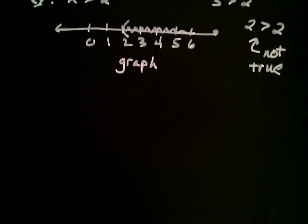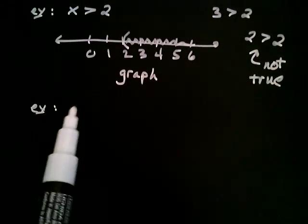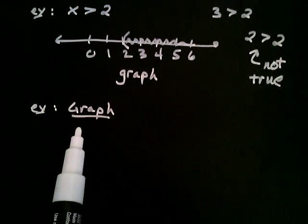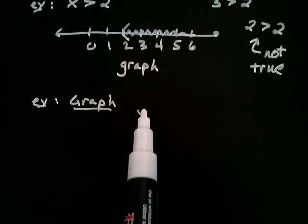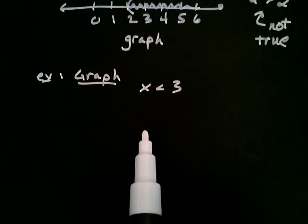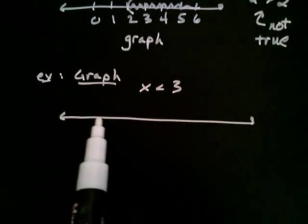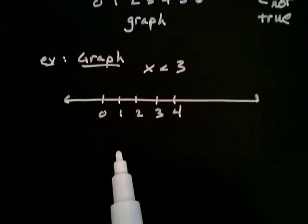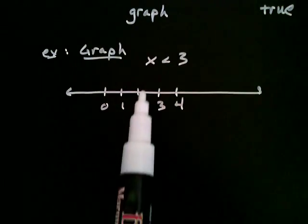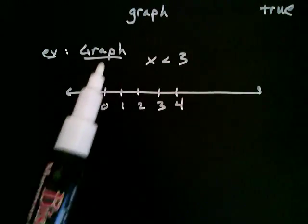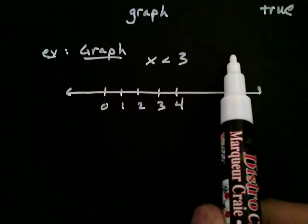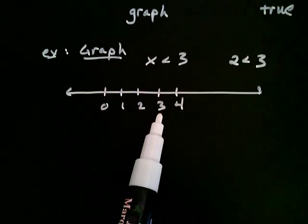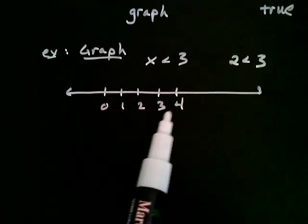Let's try another one. Let's say we want to graph the inequality x is less than three. On a number line — zero, one, two, three, and four — I'm thinking about numbers that, when I plug them in, make the statement true. For example, if I put a two in for x, I get two is less than three, and I know that's true. So two is to the left of three. Likewise, the statement is true if I put a one there as well, because one is to the left of three.